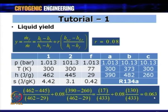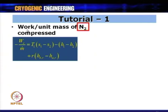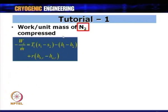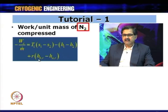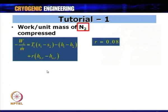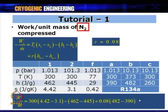The yield has increased to 0.063 for the pre-cooled system compared to 0.04 for the simple system. Now calculating work per unit mass of gas compressed: the formula adds the contribution of the refrigerating compressor — the additional term r·(H_Br − H_Ar) — giving a total of 386.3 J/g.